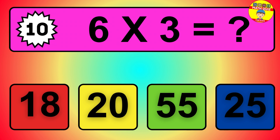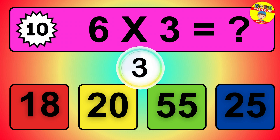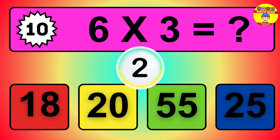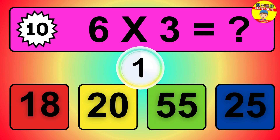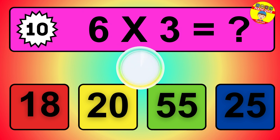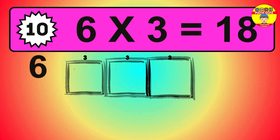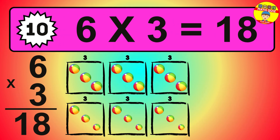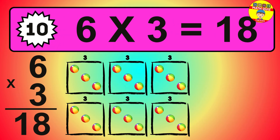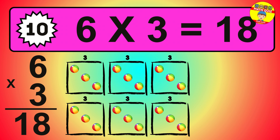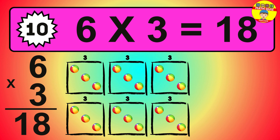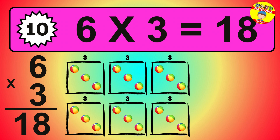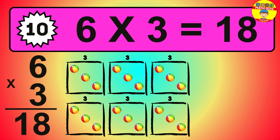Question 10. 6 times 3 equals what? The answer is 6 times 3 is 18. To calculate, we have 6 groups with 3 balls each one. So how many balls do we have? 18 balls.